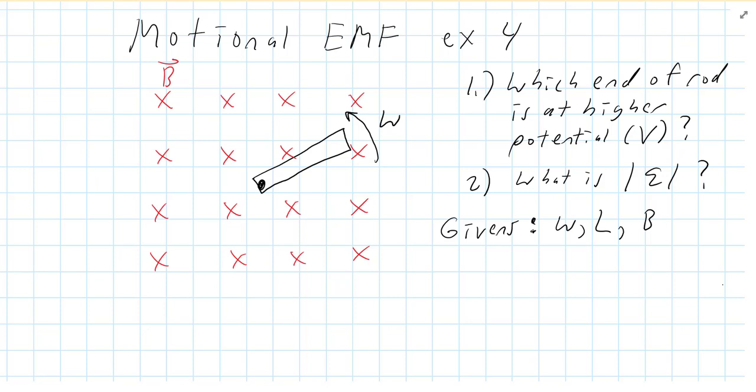And the questions are: which end of the rod is at a higher potential, aka voltage? And what is the EMF generated? What is that voltage? In terms of the givens, and I'm giving you three things: the angular velocity omega,